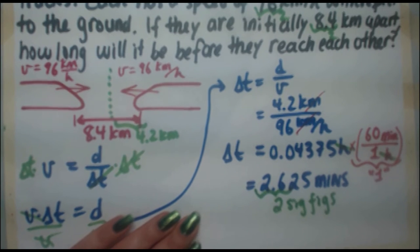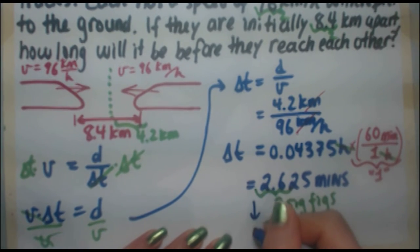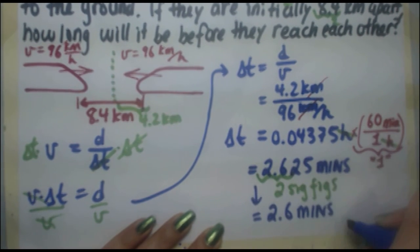2 sig figs for this, the 2.5 does not round the 6 up, it'll keep the 6 where it is, therefore, the final time is 2.6 minutes.